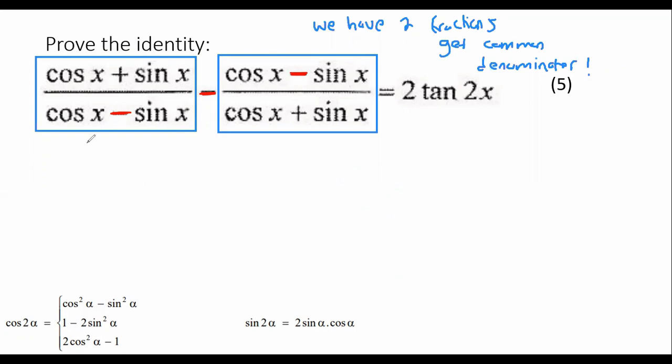So what would the common denominator be for this? You've got cos x minus sin x, and then you've got cos x plus sin x. Well, that just means that your common denominator, your LCD, is just going to be cos x minus sin x, cos x plus sin x.